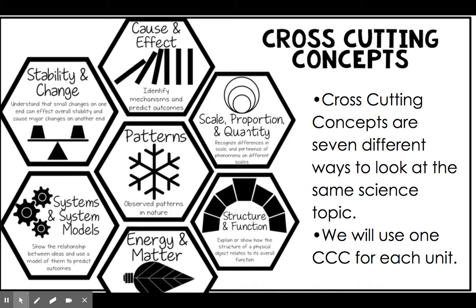Cross-cutting concepts are similar to our science and engineering practices, but instead of being things that scientists do the way the practices are, the cross-cutting concepts are seven different ways that scientists approach looking at phenomena or problems and analyzing them to try and figure out what's going on. Every time we do a science unit, we are going to be focusing on using one cross-cutting concept as a way to analyze what we are seeing.